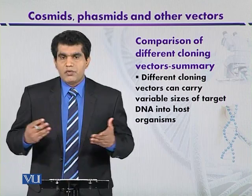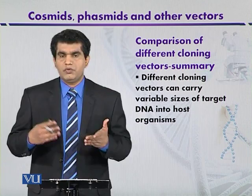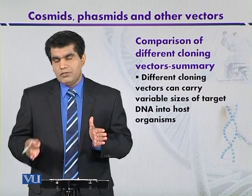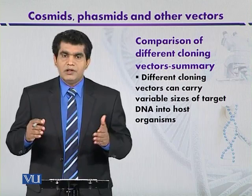After that, we also focused on a different type of cosmid vector that can clone up to 45 to 52 kilobase DNA fragments. And if we want to clone larger DNA fragments, then bacterial artificial chromosomes and yeast artificial chromosomes are important members.